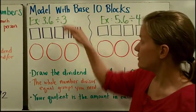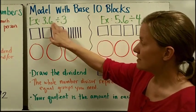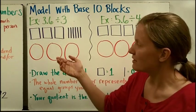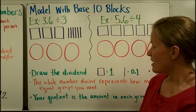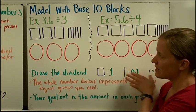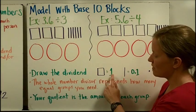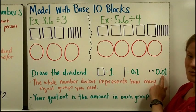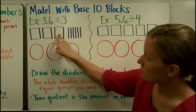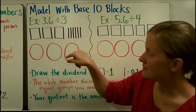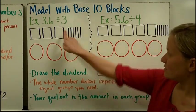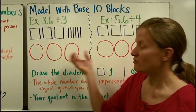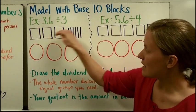Now let's see how you could find the exact answer using a model with base 10 blocks. If you had 3.6 divided by 3. For example, maybe you had 3.6 pounds of candy and you wanted to divide it evenly among 3 friends. Well, the first thing to do is to draw the dividend. Remember that we're going to use this code to represent each part of the decimal. We're going to draw a big square to represent the ones place. We're going to draw just a straight line to represent the tenths. And then a single dot are going to represent the hundredths. So here I have done 3 wholes, 1, 2, 3, and 6 tenths, 1, 2, 3, 4, 5, 6. Then the whole number divisor, so that's the 3, represents how many equal groups you need. So that's why I drew 3 red circles to represent each of my 3 groups.